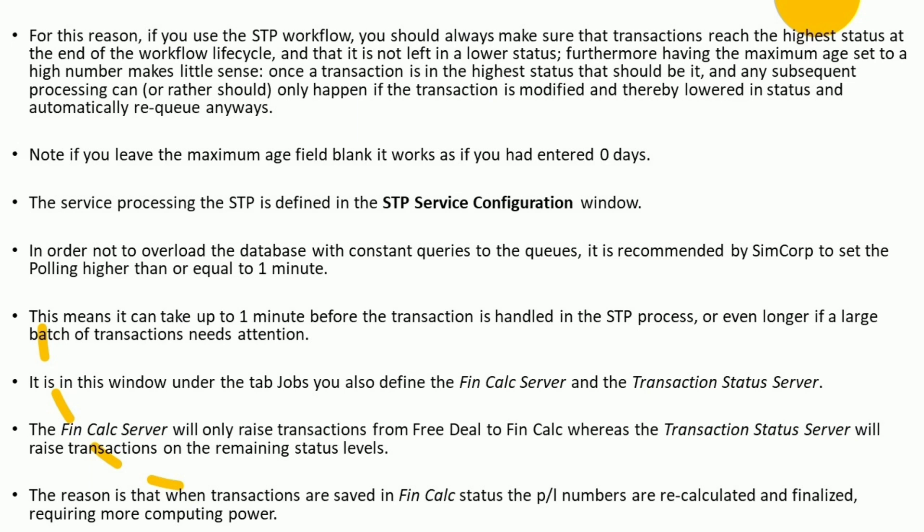Make sure transactions are not left in a lower status. Furthermore, having the Maximum Age set to a high number makes little sense — once a transaction is in the highest status, that should be it. Any subsequent processing should only happen if the transaction is modified and thereby lowered in status and automatically re-queued. Note: if you leave the Maximum Age field blank, it works as if you had entered zero days.